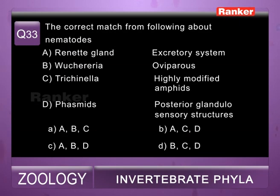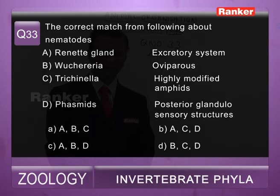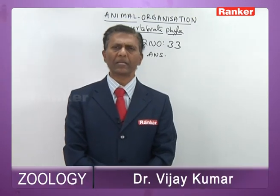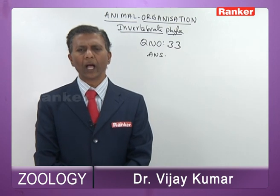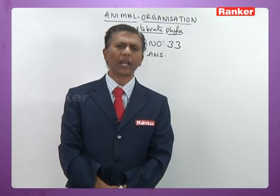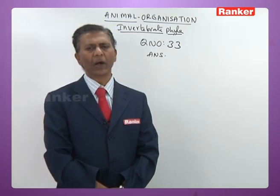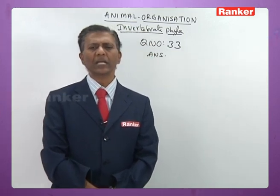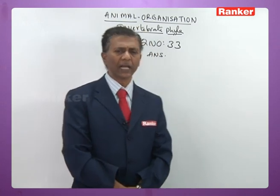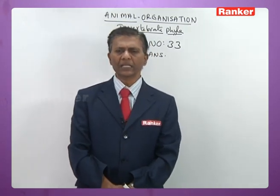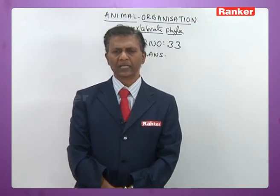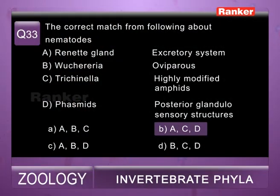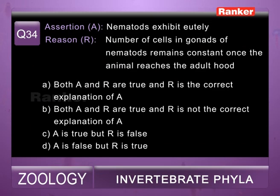Question thirty-three: correct match from the following about nematodes — a) renette cells: excretory system (correct — renette cells are present in nematodes apart from H-shaped excretory canals), b) Wuchereria: oviparous (wrong — Wuchereria is ovoviviparous), c) Trichinella: highly modified amphids (correct), d) phasmids: posterior glandular sensory structures (correct). So correct options are a, c, and d. Thirty-third question correct answer is b.